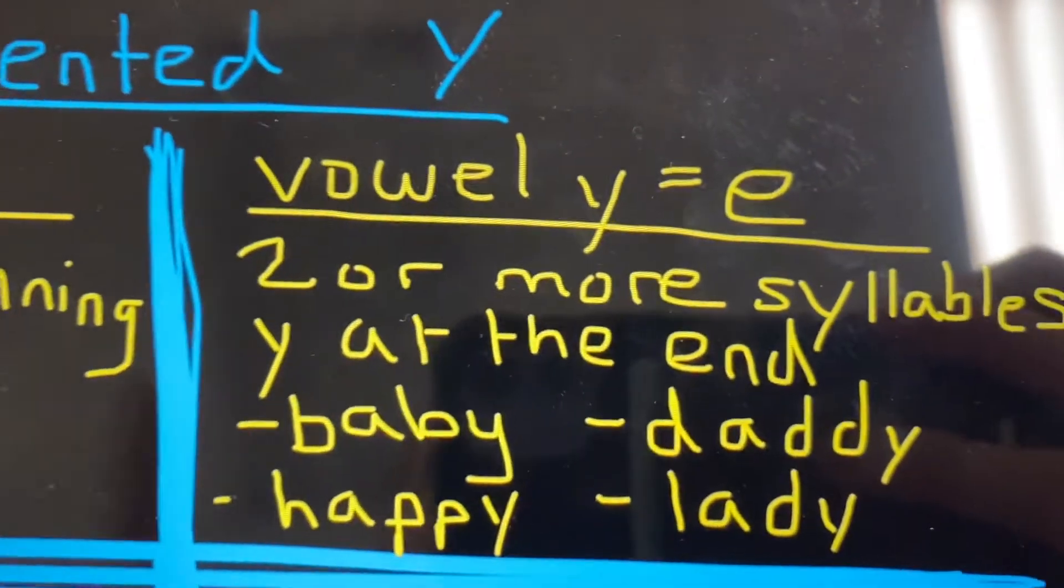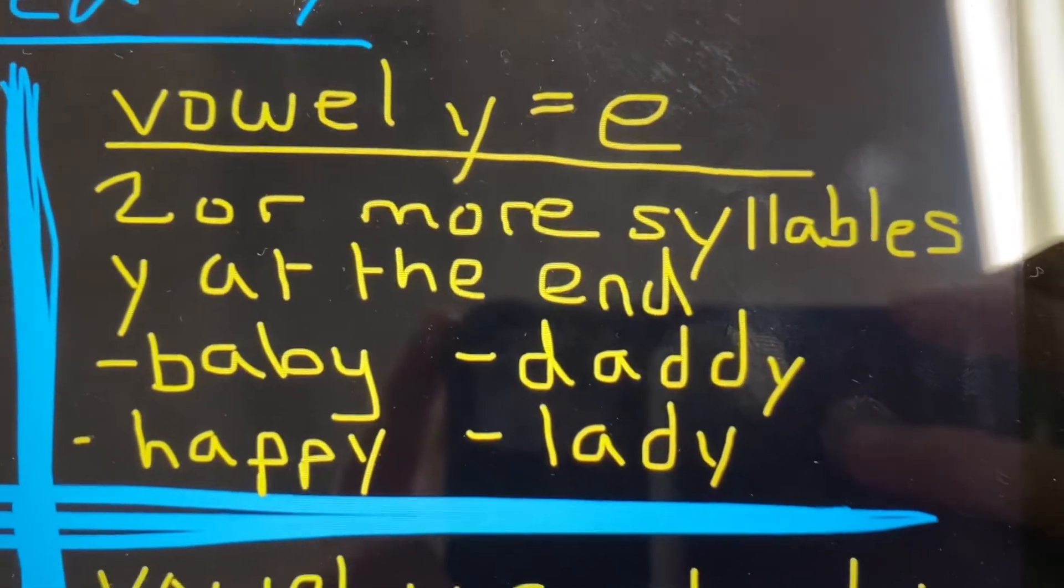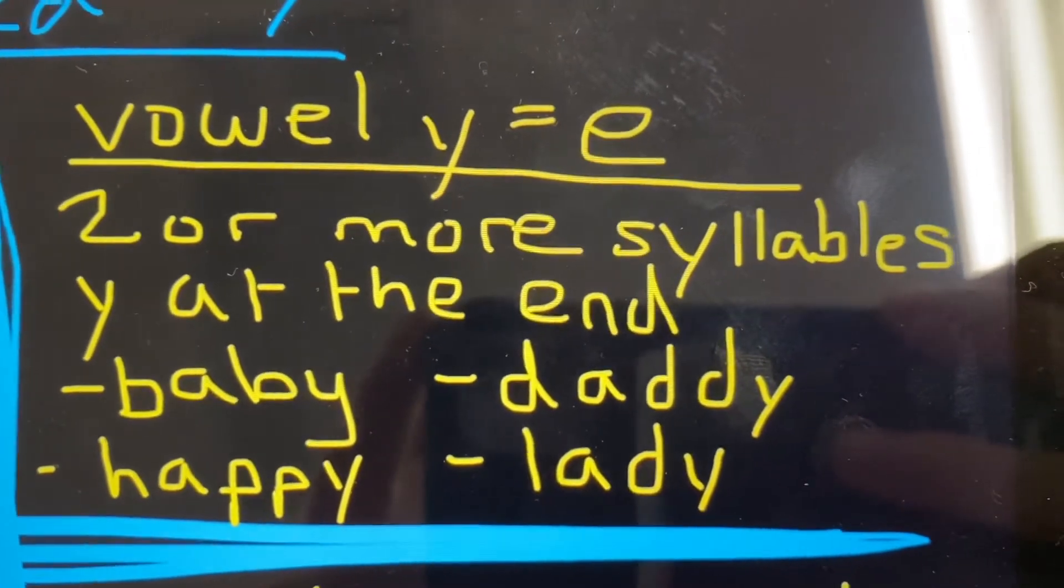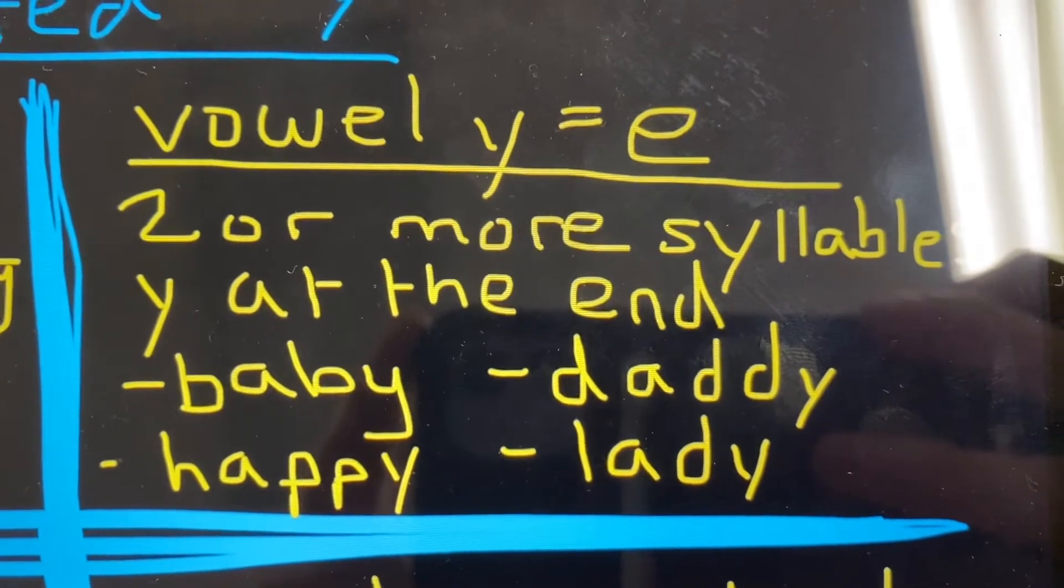If we're thinking of vowel Y when it says the long E sound, you are thinking of a word that has two or more syllables and has Y at the end, like baby, daddy, happy, or lady.